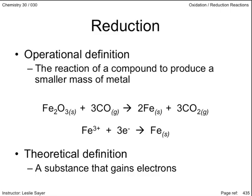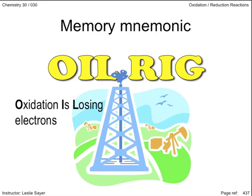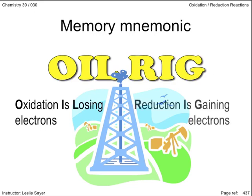To remember which term means losing electrons and which term means gaining electrons, use this simple mnemonic: OIL RIG. Oxidation is losing electrons; reduction is gaining electrons.